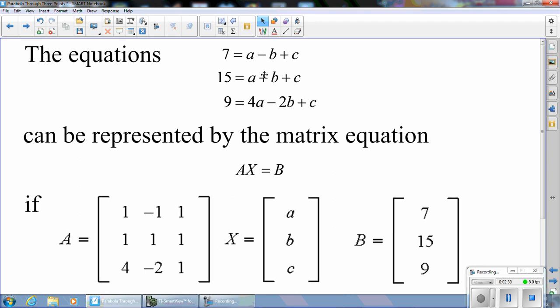Notice these elements in the A matrix are the coefficients in the equation: 1, negative 1, 1; 1, 1, 1; 4, negative 2, 1. The X matrix is our variables a, b, and c. And the B matrix is the column matrix of the constants: 7, 15, and 9.